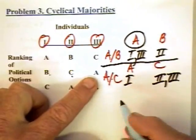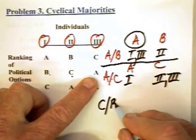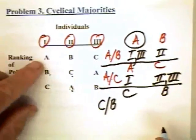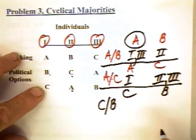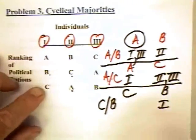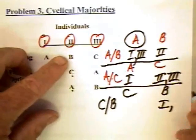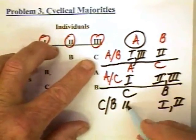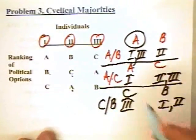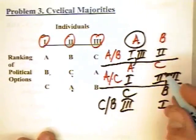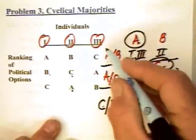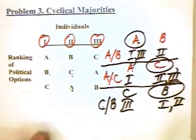Since C won, let's put C against B and see which one wins. Individual one would prefer B over C. Individual two would prefer B over C. Individual three would prefer C over B. So what happens is that A beat B, C beat A, and therefore we might expect C to beat B — but what we have is that B wins.